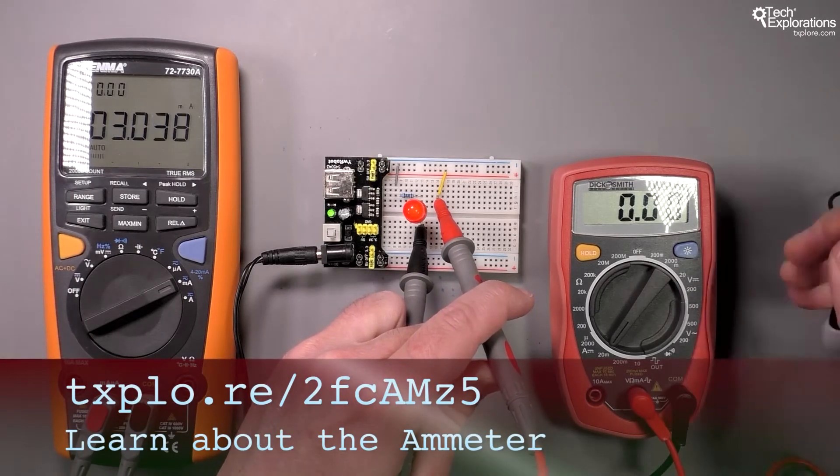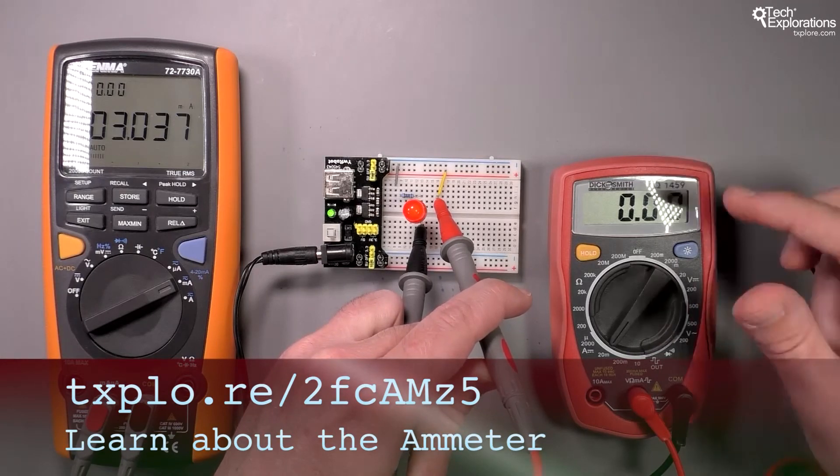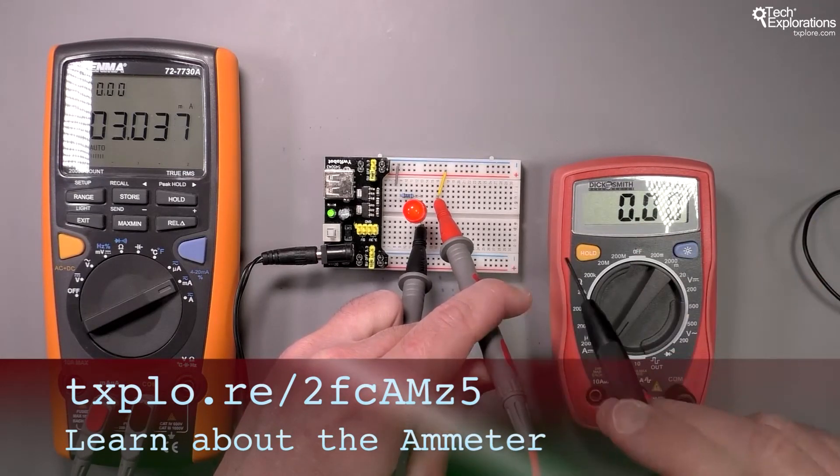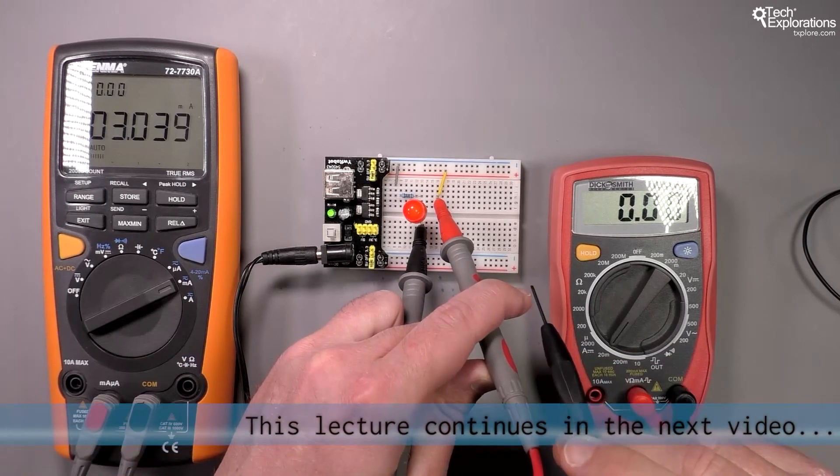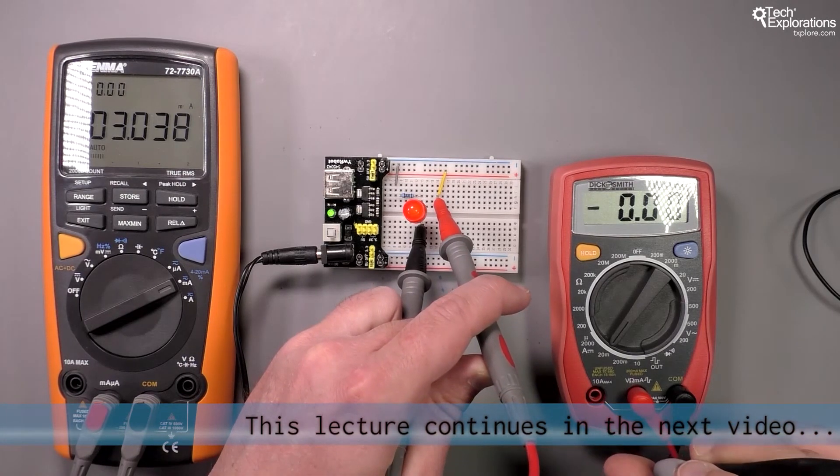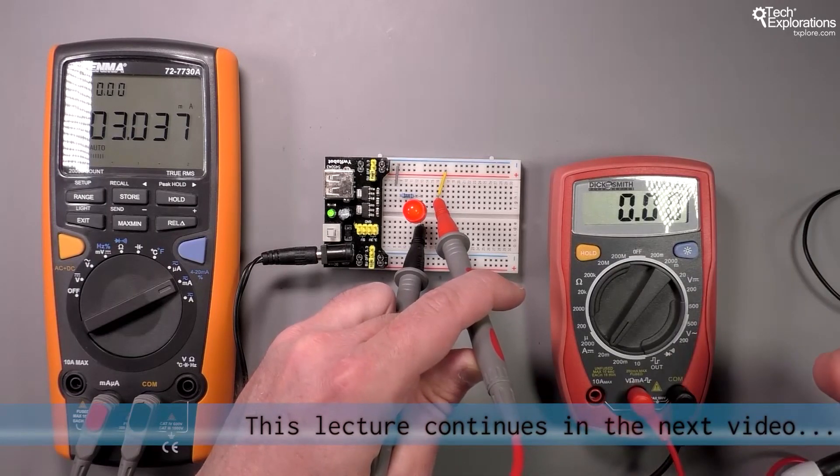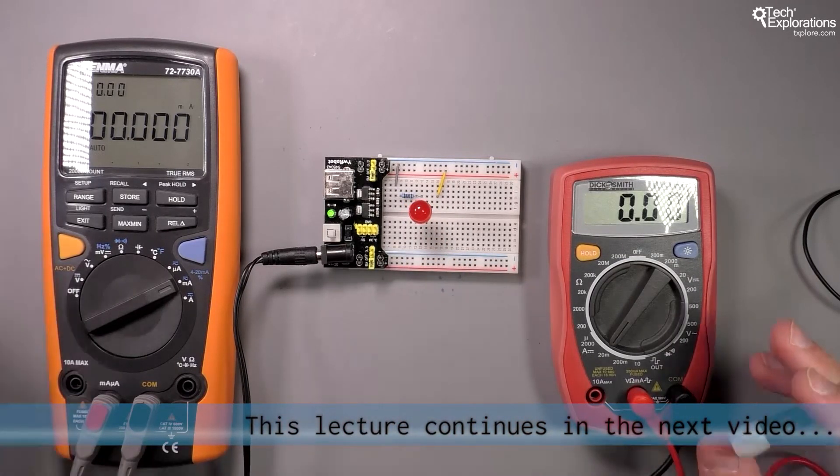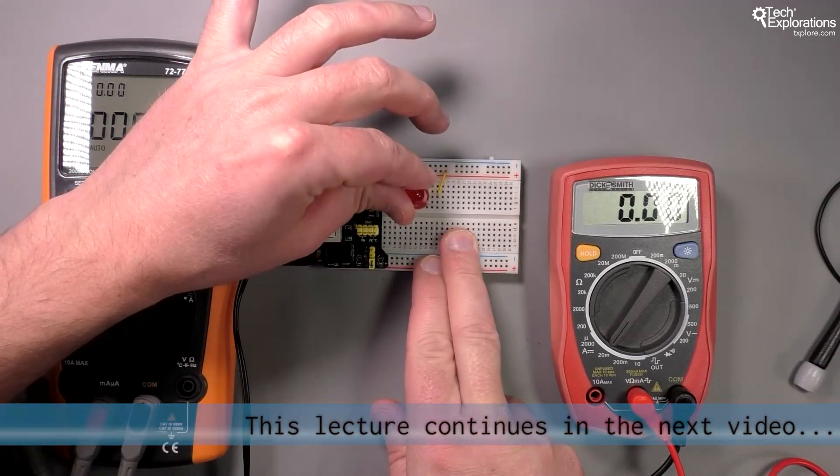In this case, you can see that with my older, slightly cheaper multimeter, I wasn't able to get a measurement of low milliamp range current. I was able to do so with my slightly more expensive multimeter. It's a sensitivity issue. I'm going to restore my circuit so the LED is on.